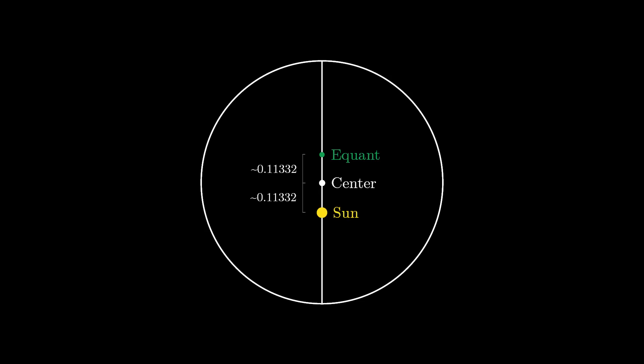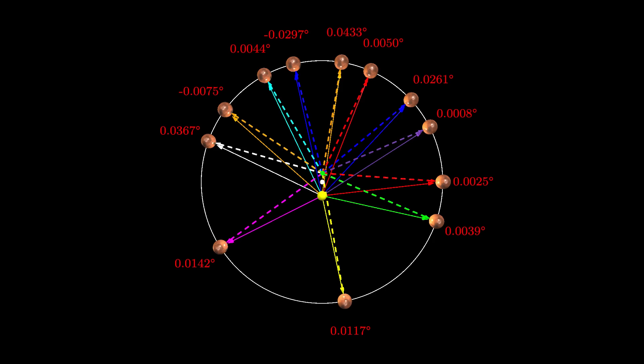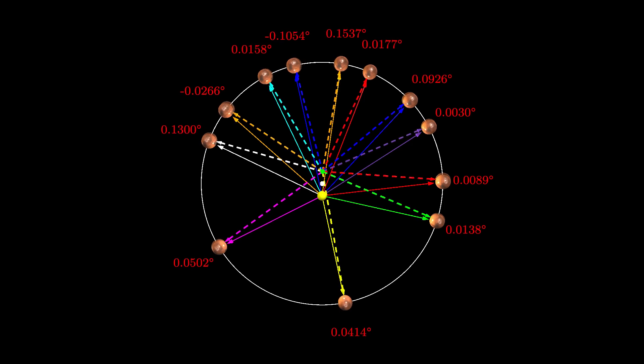Kepler noticed that his newly computed Sun-centered distance put the center of Mars' orbit approximately at the midpoint between the Sun and Equant, just as Ptolemy had in his model 1,500 years before. Questioning if Ptolemy actually had it right all along, Kepler made this change to his model, returned to his overhead view, and recomputed his longitudes.